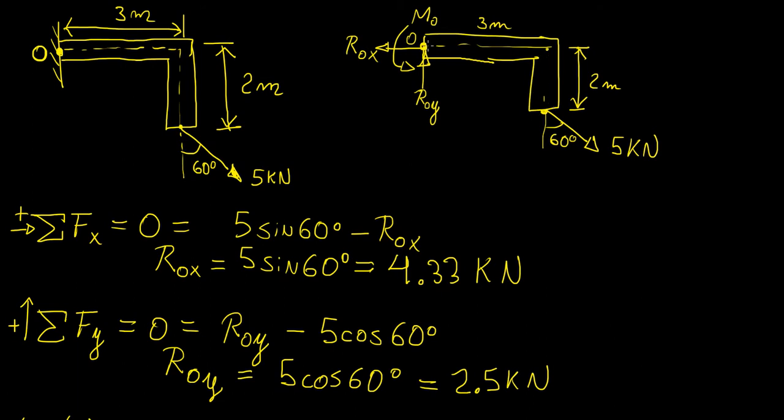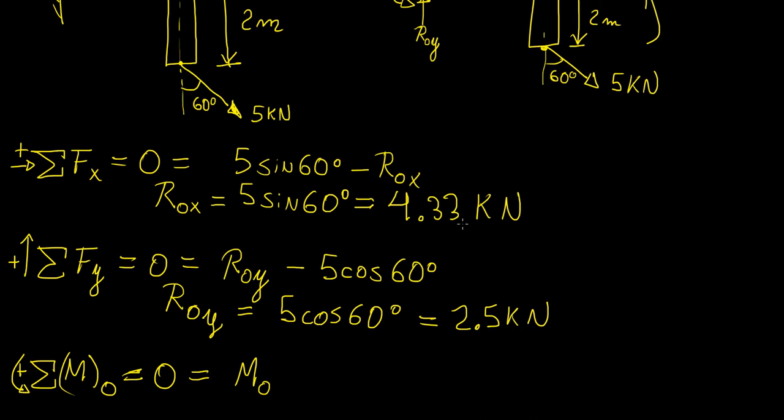Then this is going to generate two moments actually if we look at it this way. So if we consider this perpendicular distance over here, then the horizontal component of this force is going to be generating a rotation about this point like this. So in that case we can say that that's going to be positive as well. So it's going to be the horizontal component which is 5 sin 60° times the perpendicular distance which is in this case two meters.